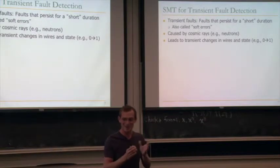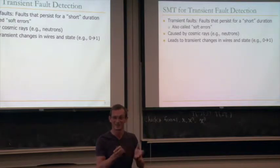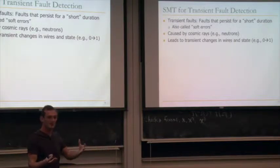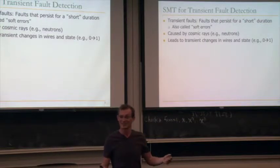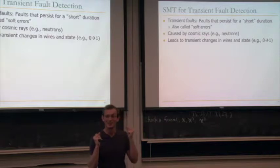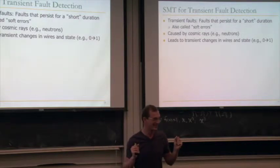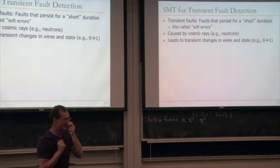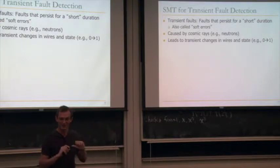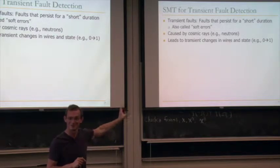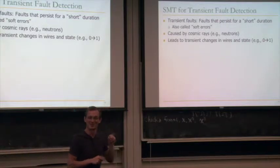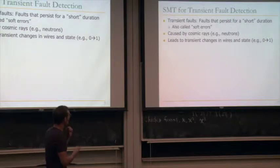People often confuse these terms — you may see papers writing 'soft errors' when they mean 'soft faults' or 'transient faults.' By this definition, you don't need to detect every single fault. If the fault is masked and won't change the outcome, you might as well not do anything about it. The question is: do you know whether a fault will change the outcome? That's the difficult part and an active research question.